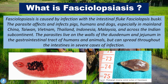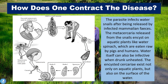Now let's take a closer look at how one can contract this disease. The parasite actually infects water snails after being released by infected mammalian feces — so that's human feces, dog feces, or pig feces. The metacercariae which are released from the snails encyst on aquatic plants like water spinach, which are eaten raw by pigs and humans. The water itself can also be infective when drunk unheated, as the encysted cercariae exist not only on aquatic plants but also on the surface of the water.